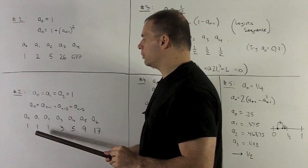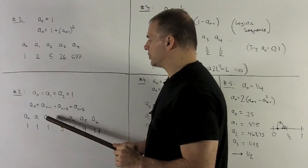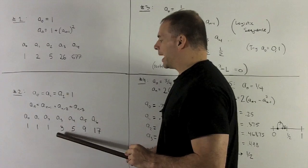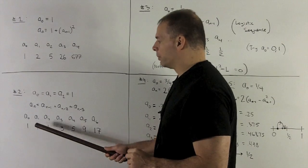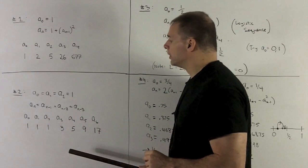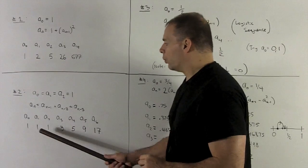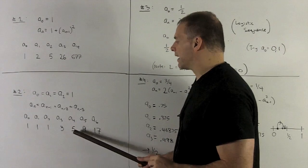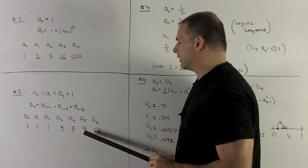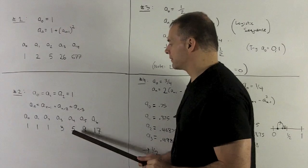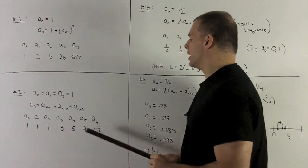So we have 1, 1, 1 for a₀ through a₂. Then a₃ I get by adding these together, which gives me 1 plus 1 plus 1 is 3. A₄ I get by adding 1 plus 1 plus 3 together, which is 5. A₅ is going to be given by adding 1 plus 3 plus 5, which is 9, and so on.